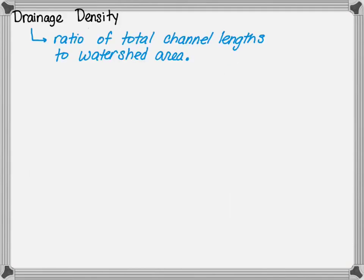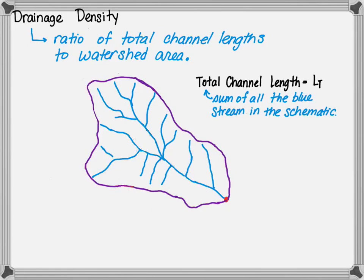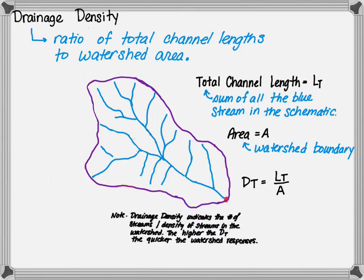Next, drainage density. Drainage density is the ratio of total channel lengths to watershed area. If you can imagine the Burbank Canyon watershed with all our channels, the total channel length is the sum of all the blue streams in the schematic, while the area is the boundary of the watershed. If you take the ratio of the length to the area, you will be left with the drainage density. Drainage density indicates the number of streams, or you can think of it as the density of streams in the watershed.